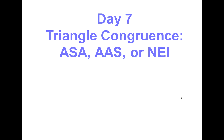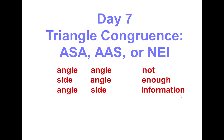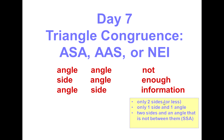NEI is 'not enough information,' which we're all tempted to put down if we don't know the answer. Examples would be if only two sides or less have been labeled, if one side and one angle have been labeled, or two sides and an angle that is not between them. If it reads SSA, that is not enough information.